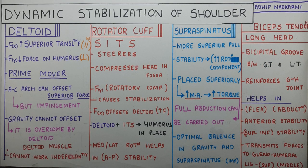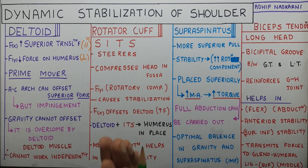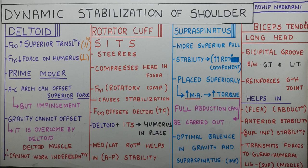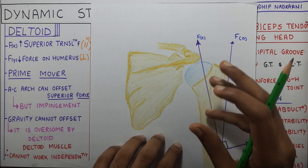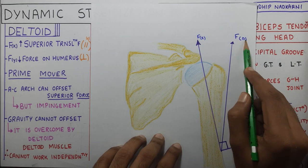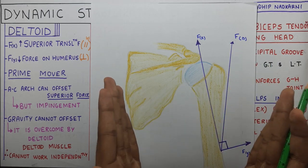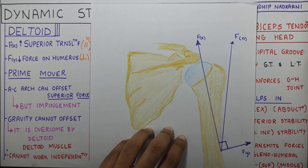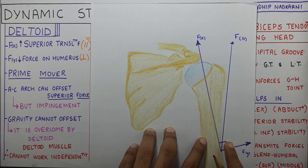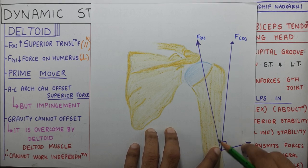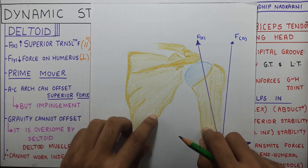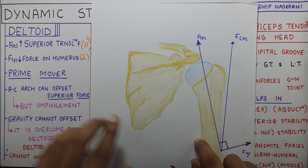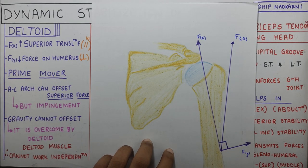Let's start with the deltoid first. The deltoid has three parts: anterior, middle, and posterior. All three vectors can be combined into a single deltoid vector representing the pull deltoid has on the humerus. The force deltoid exerts is FD, and when we resolve this vector into two components — a parallel component and a perpendicular component — FX is a very large superior translatory force parallel to the humerus, and FY is a reduced force perpendicular to the humerus bone.